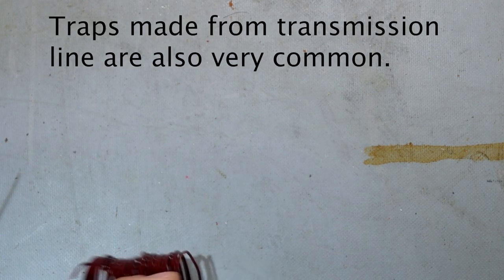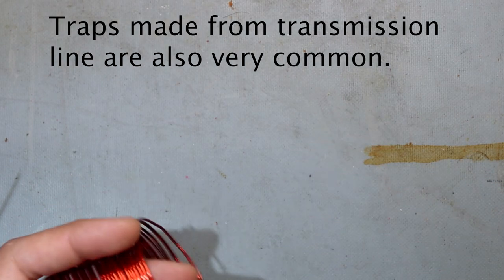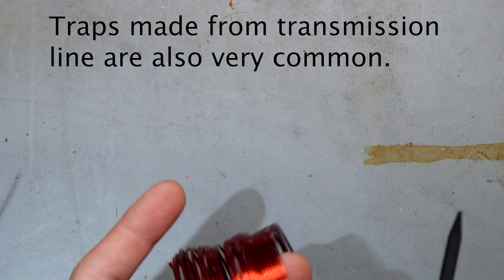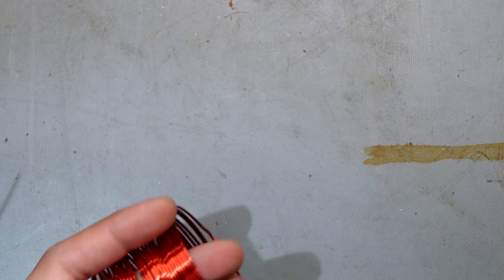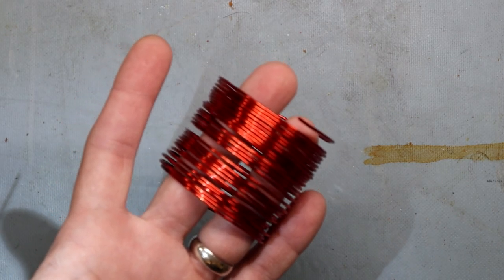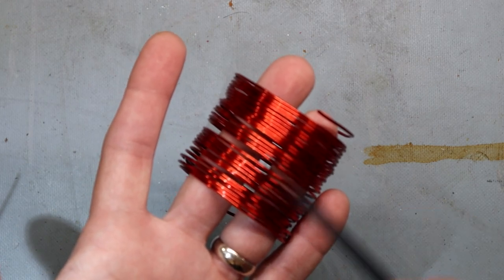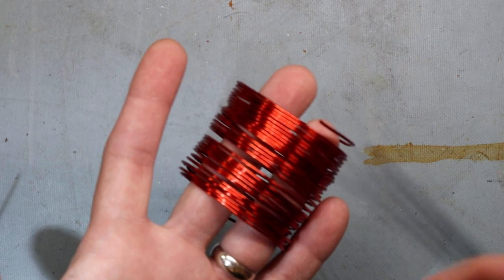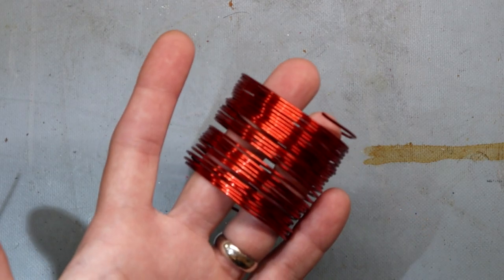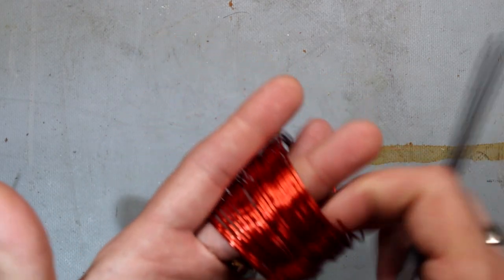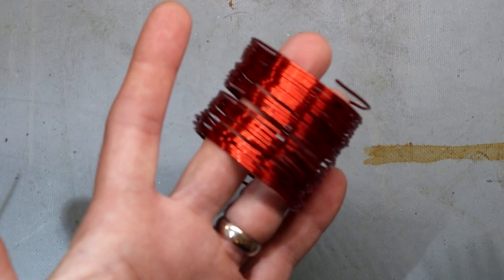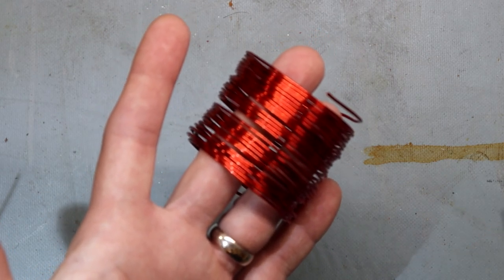So back in the old days they used to use an inductor and a physical capacitor in parallel. The problem is you have a lot of high circulating currents in the tank circuit and the capacitors used to blow up, catch on fire, all that kind of good stuff. If we have an inductor, we have a coil of wire, and the more turns the more inductance you get, and the diameter plays into that.